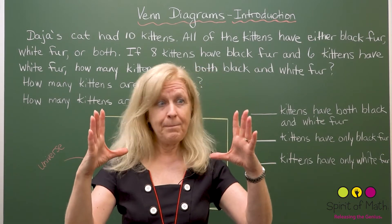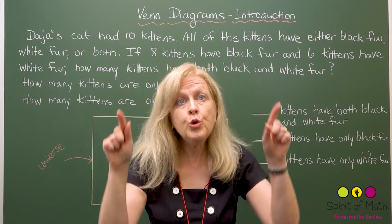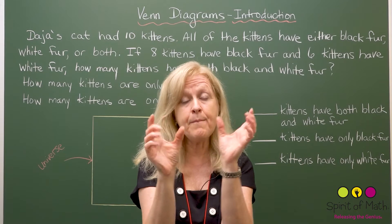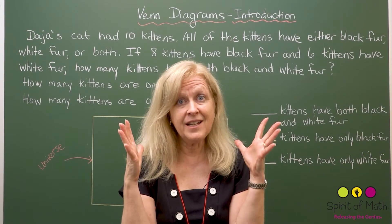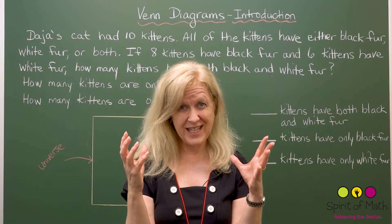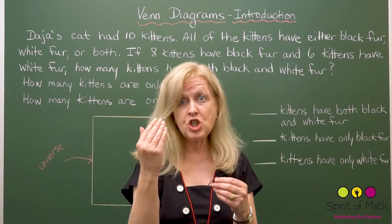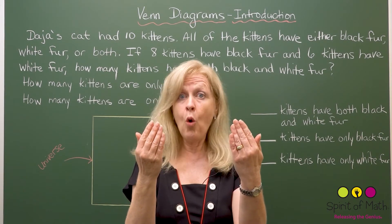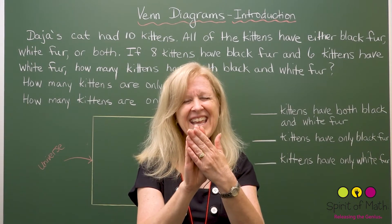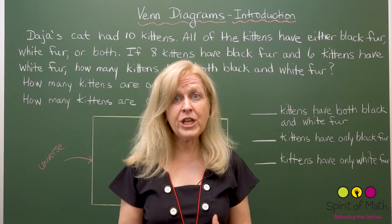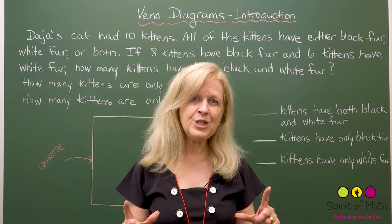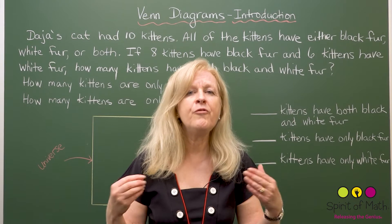He said: if you've got a set of people or a group of things, and some of them have one characteristic and some have another and some have both characteristics, then you can answer it this way. Characteristics means like socks that are blue or socks that are red, or socks that are both red and blue. He said we can demonstrate this using pictures, and now all over the world we call these Venn Diagrams.